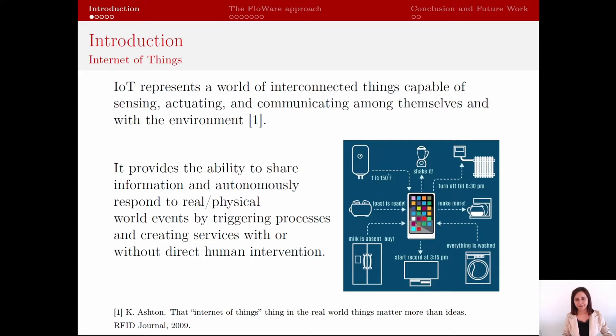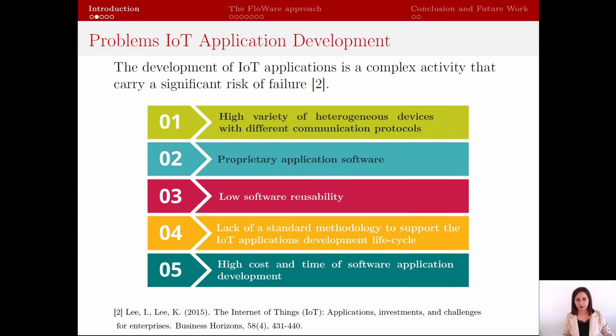Let's start with a brief introduction to the Internet of Things. The Internet of Things represents all the interconnected devices and resources capable of sensing and communicating with each other to create services with or without human intervention. The development of IoT applications that interconnect these devices and services is a complex activity that requires a high investment of resources. One of the main problems is the interconnection between heterogeneous devices and different communication protocols.